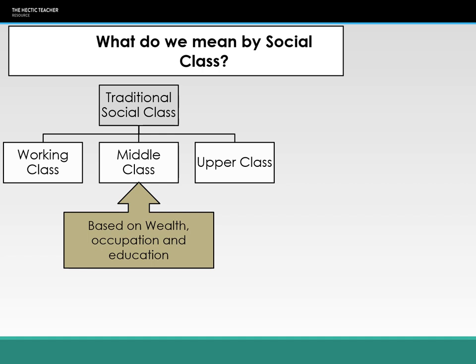To give an example using the categories the traditional system uses: based on my wealth I'd be working class. I have no savings, I don't earn a massive amount of money, I don't own my own house, I don't have any assets. So under the wealth category I would be considered working class.